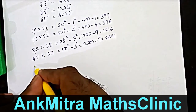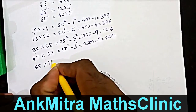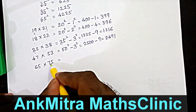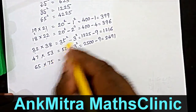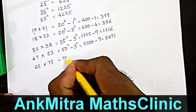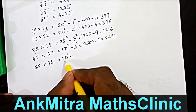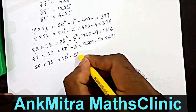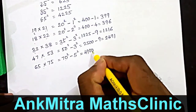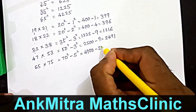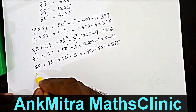Let's say we are supposed to multiply 65 with 75. The middle number is 70. So we will start with 70 squared, then subtract the square of five, because five is the difference between 70 and either of these two numbers. 70 squared is 49 followed by two zeros — that is 4900 — minus twenty-five. So the answer comes to four thousand eight hundred and seventy-five.